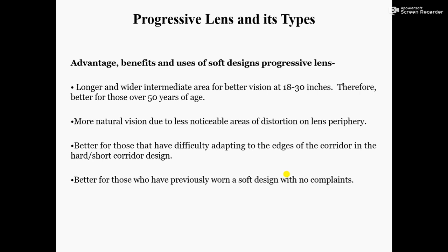Number two: more natural vision due to less noticeable areas of distortion on the lens periphery. Number three: better for those that have difficulty adapting to the edge of the corridor in the hard oblique short corridor design — meaning patients who are not comfortable with a narrow intermediate portion will benefit from the soft design.